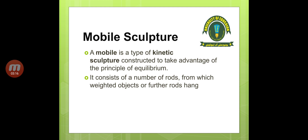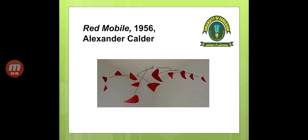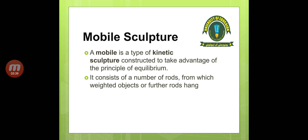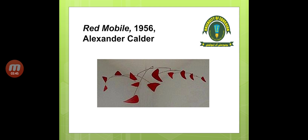There are many rods used to hang weighted objects or more rods — this is a mobile sculpture. 'Red Mobile,' 1956, by Alexander Calder is an example you can see on screen. You can see the rods as well as red-colored objects hanging from them. These are included in kinetic art.